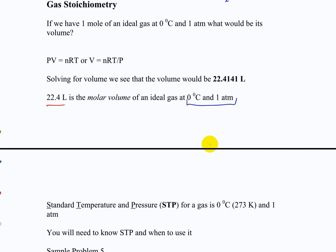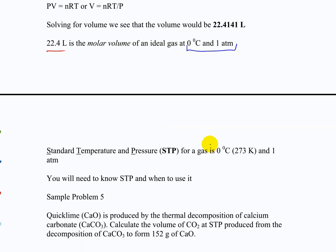Those particular conditions — zero degrees C and one atm — are known as standard temperature and pressure, or STP. Zero degrees C is 273 K, one atmosphere is atmospheric pressure. So a lot of times we'll be doing calculations dealing with STP. A gas at STP means you automatically know the pressure and the temperature: one atmosphere, 273 K. And going back to Monday, remember that number — 760 torr.